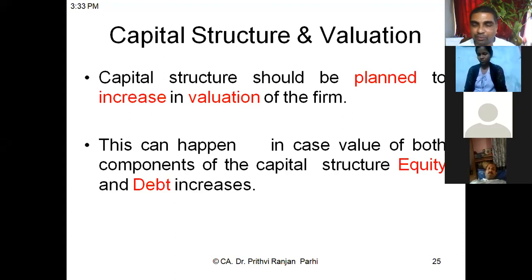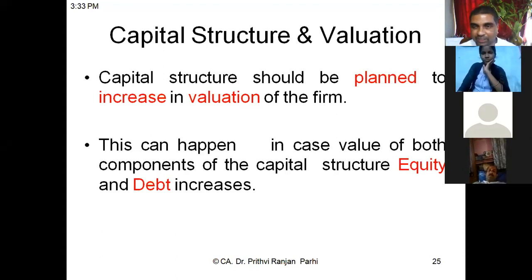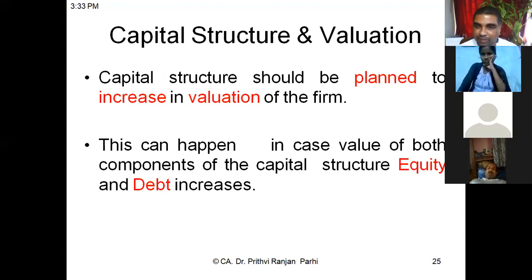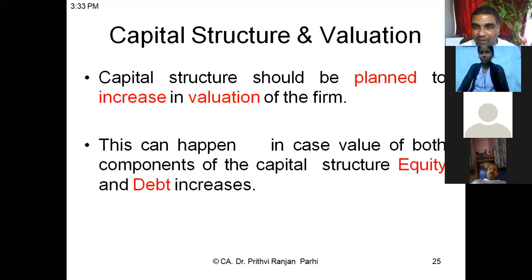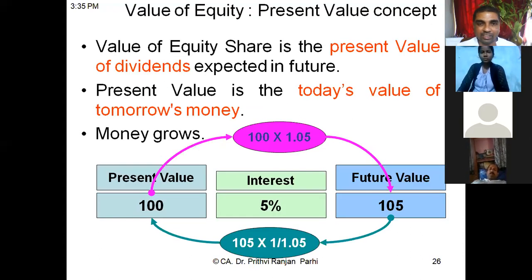If we are trying to maximize the value of the firm, that means we have to try to maximize the value of equity as well as the value of debt. That is the relationship between valuation and capital structure. The ultimate objective is to maximize the value of the firm. So there is a need to understand how to compute first of all the value of equity.